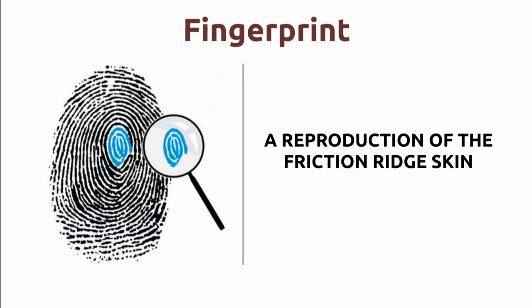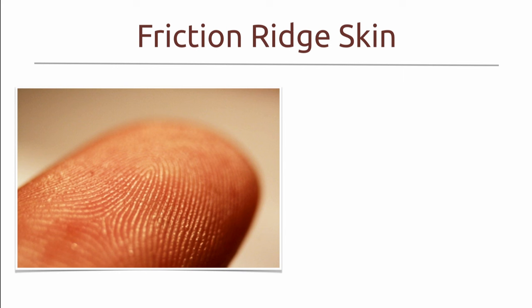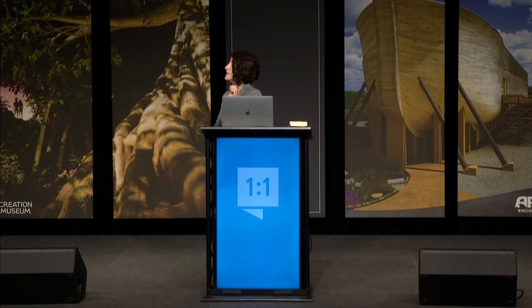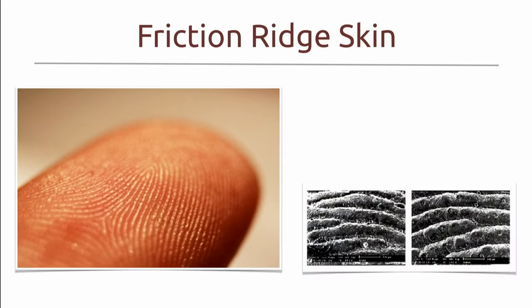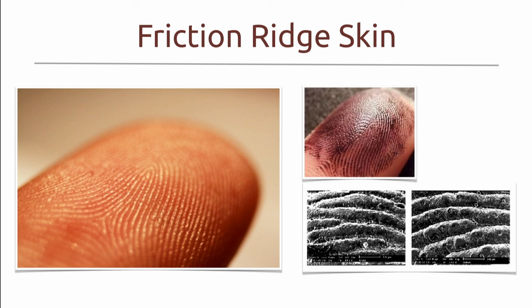If we were going to define what a fingerprint is, we would define it as a reproduction of your friction ridge skin. Friction ridge skin is a distinctly different type of skin that God created for a very specific purpose. If you rub the underside of your arm, your skin is very soft and smooth — distinctly different from your friction ridge skin. If you rub your hands together, you can almost feel those raised ridges. Looking at friction ridge skin microscopically, you can see how it almost rolls like mountains and valleys. Because we have these mountain peaks and furrows in between, we can apply ink and take a copy of your fingerprint pattern.